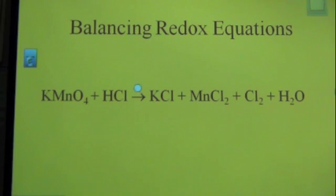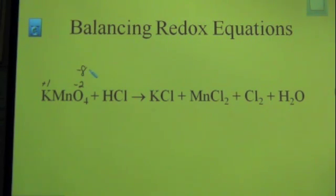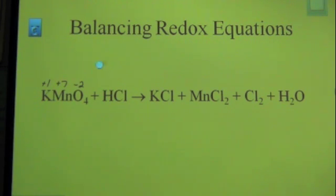We're going to do the exact same thing for the product side because we've got to identify what is gaining and losing electrons. Starting with potassium permanganate: potassium is in group 1A so it's going to exhibit a plus 1 charge. Oxidation numbers are just apparent charges that elements exhibit within a compound. Each oxygen is going to exhibit a negative 2 — oxygen can exhibit a negative 1 in peroxides but here it's negative 2. We have 4 oxygens, balancing out a negative 8, so potassium contributes 1 and manganese here has to be a plus 7. So potassium is plus 1, manganese is plus 7, and each oxygen is negative 2.